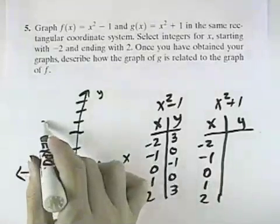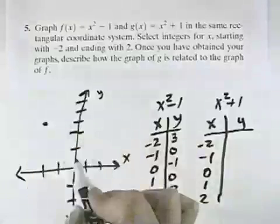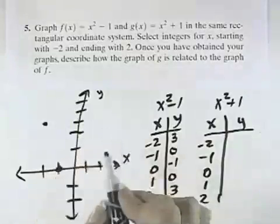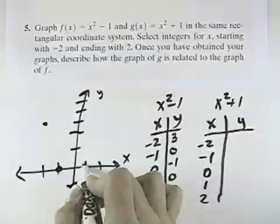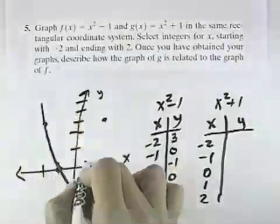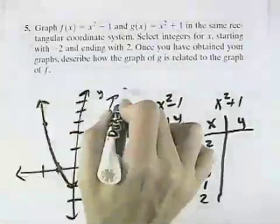So we have negative 2, positive 3, negative 1, 0, 0, negative 1, 1, 0, and 2, positive 3 for our graph of f.